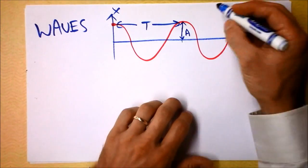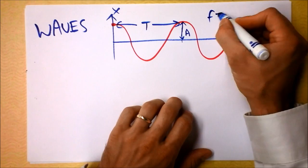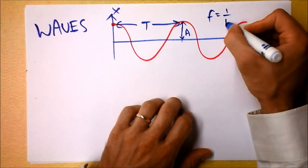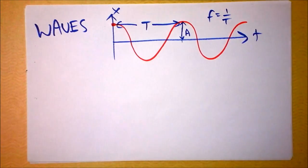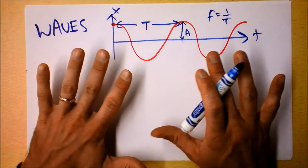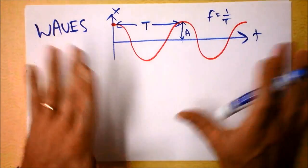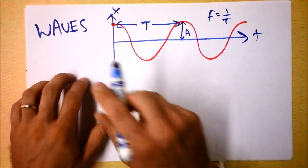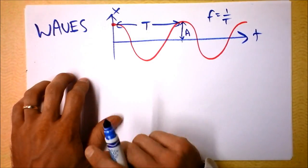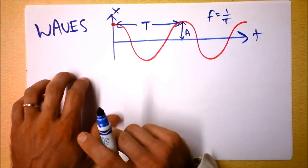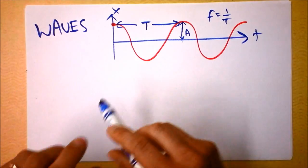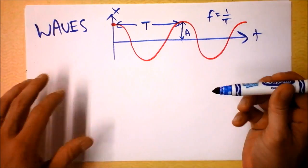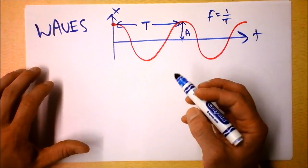From the period we've calculated frequency because it's just one over the period. Now if you have something that is oscillating in simple harmonic motion — a mass on a spring for instance.